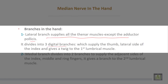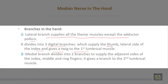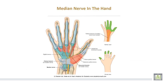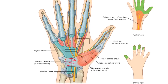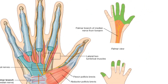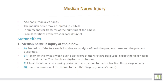The median nerve in the hand gives a lateral branch supplying all thenar muscles except adductor pollicis; it divides into three digital branches supplying the thumb and the lateral sides of the index finger, and gives twigs to the first lumbrical. The medial branch divides into two branches to supply the adjacent sides of the index, middle, and ring fingers, and gives a branch to the second lumbrical. The median nerve passes deep to the flexor retinaculum inside the carpal tunnel, supplying the lateral two-thirds of the palm and the lateral three-and-a-half fingers up to the dorsum of the terminal phalanges.